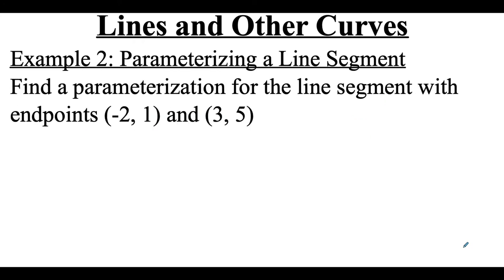Now in the next example we're given ordered pairs that are the endpoints of a line segment and we want to sort of work these backwards to figure out a parameterization. So figuring out what those equations are for x and y. So we're told that the endpoints are at negative 2, 1 and at 3, 5.